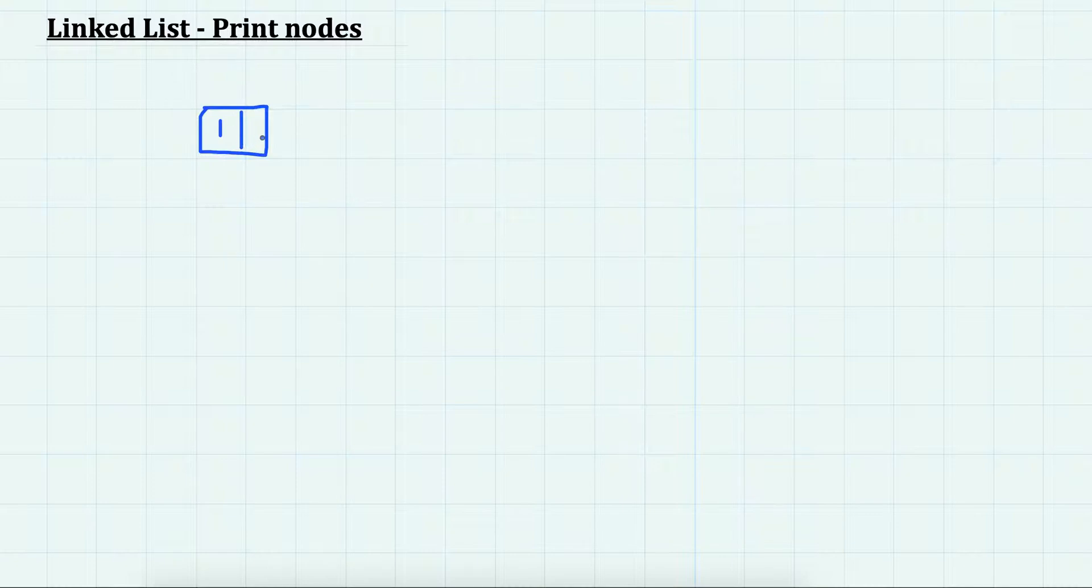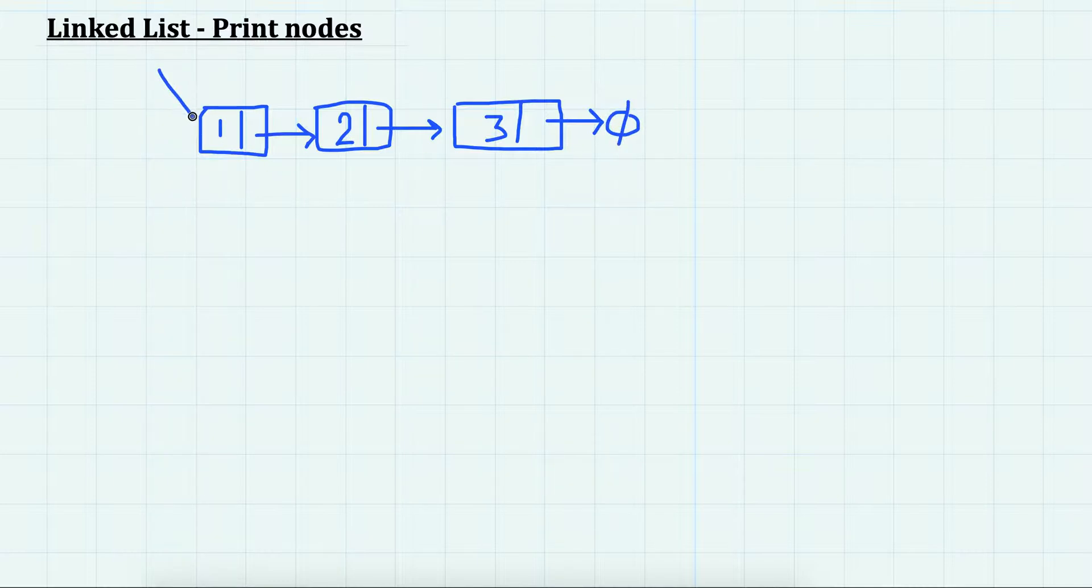So we have a list, and the next of the last node will be null, and we are given reference to head, that is the first node. To print the list, we can create a node and make it point to head.